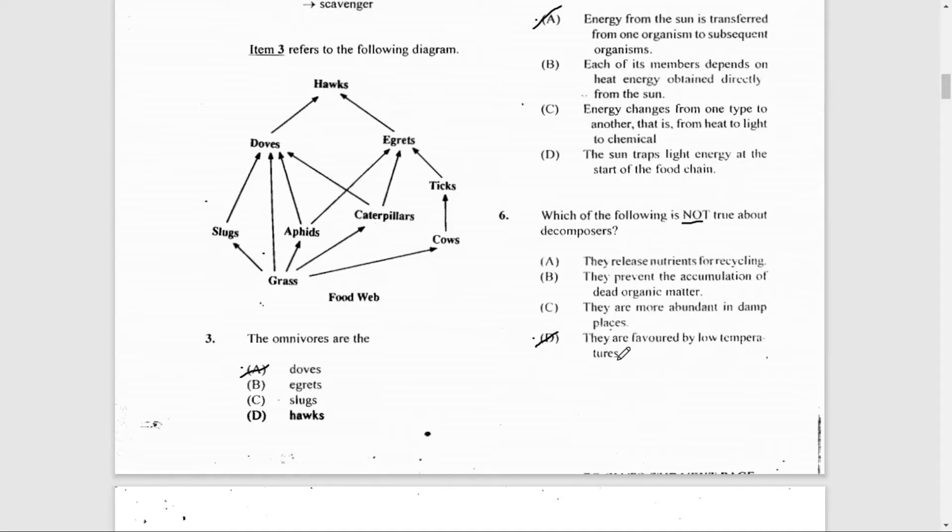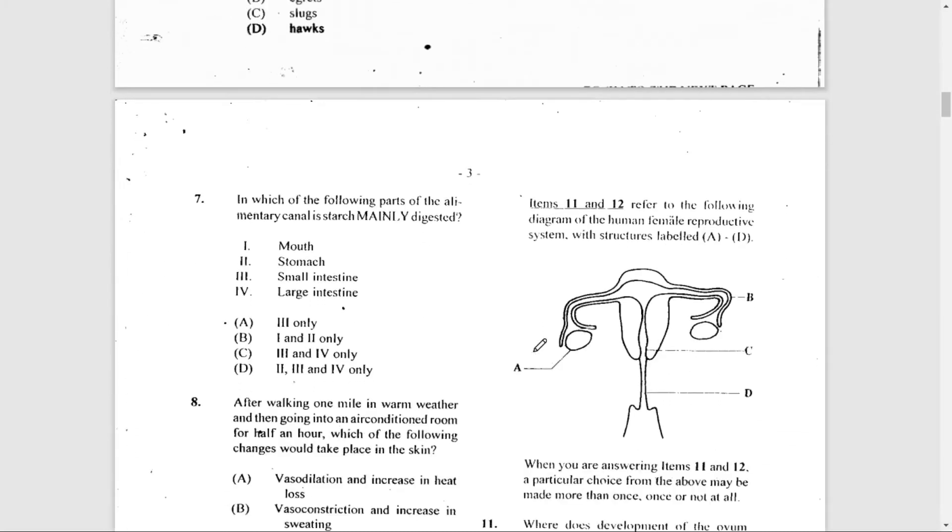Number 7: In which of the following parts of the alimentary canal—the alimentary canal is just another fancy name for the digestive tract, also called the GI or gastrointestinal tract—in which part is starch mainly digested? That would have to be the mouth, where salivary amylase breaks down starch into maltose.